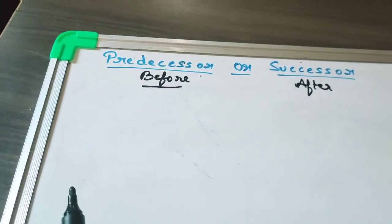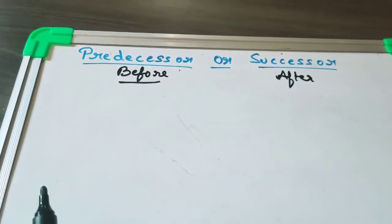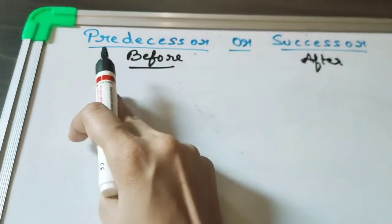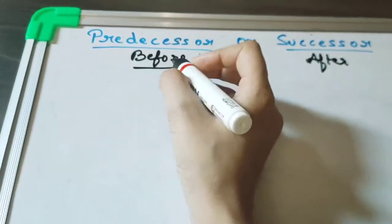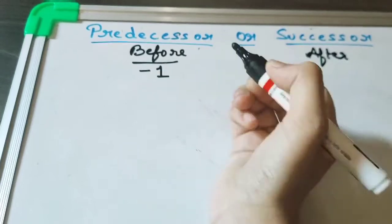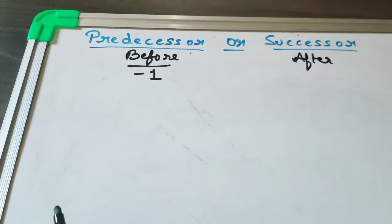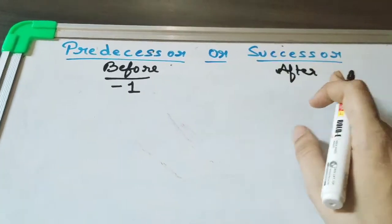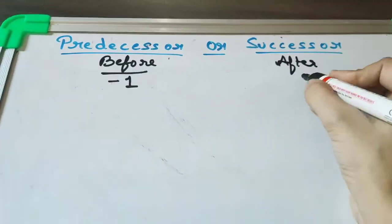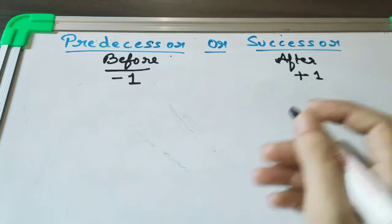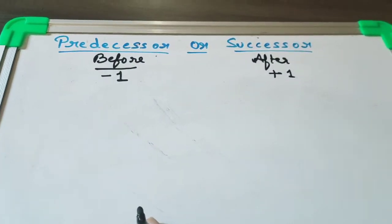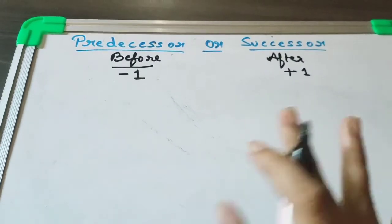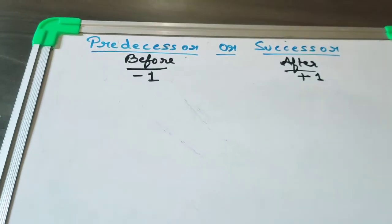And you can solve it very easily. That is, before or predecessor means we have to do what? Minus 1 from the desired number and we can find out the answer. And in after or successor, we have to add 1 in the given number to get the answer. So I hope this is clear now. Let's take some examples.